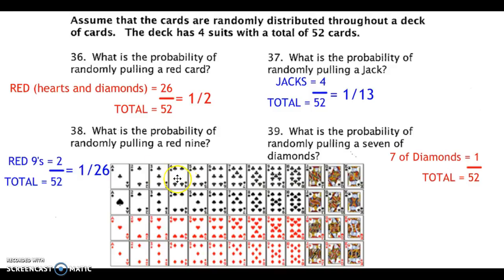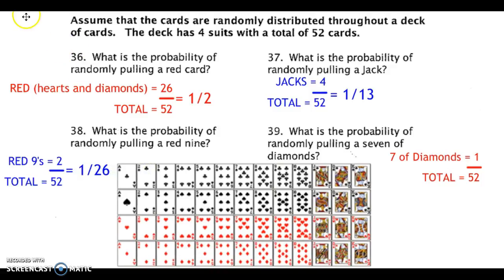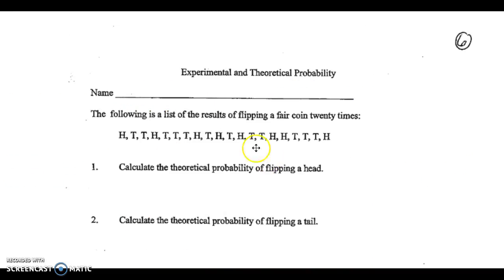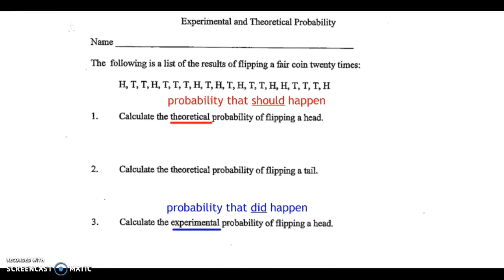You will be required to memorize the number of cards in a deck and the types, suits, and colors of those cards. I will be quizzing you when you come back from your break on those cards. Next, we'll take a look at experimental and theoretical probability. Theoretical means the probability that should happen, versus experimental, which is the probability that did happen. Take a look at these 20 flips and calculate those 4 probabilities. Pause the video now.